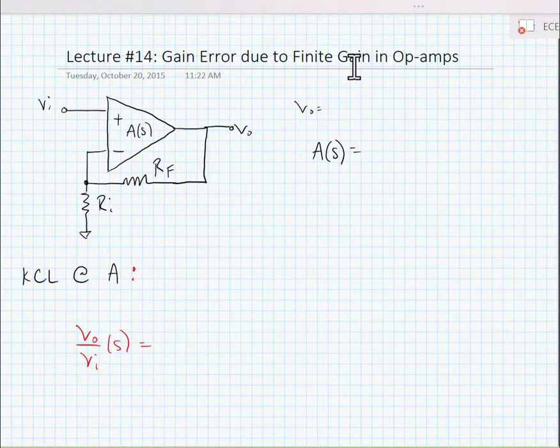Today we're going to start to look at circuits that involve amplifiers and what happens if they have less than ideal amplifiers at their core. Here we have an op-amp connected in negative feedback with a network consisting of RF and RI, and we're going to say that the op-amp itself has some finite frequency response.